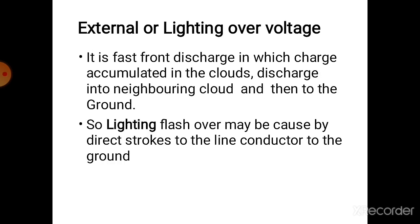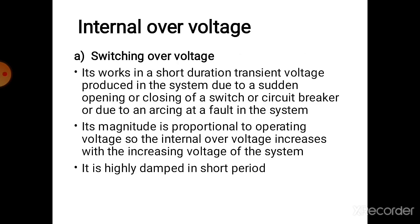External overvoltage is also called lightning overvoltage. It is a fast front discharge in which charge accumulated in a cloud discharges to the neighboring cloud, and the neighboring cloud then discharges the lightning to the ground. Lightning flashover may be caused by direct strokes to the line or conductor to the ground.